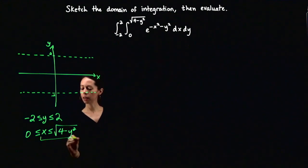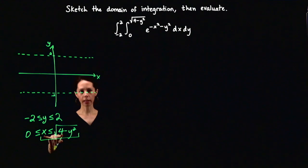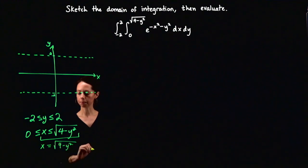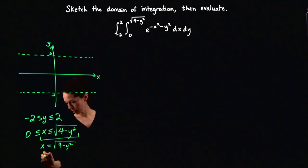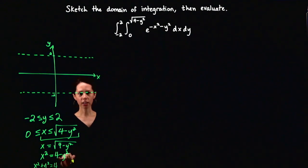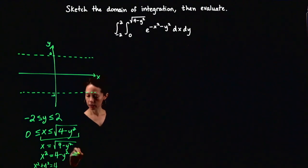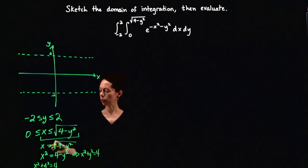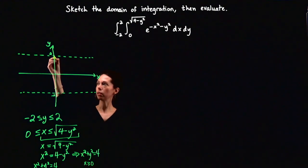If you don't recognize what shape is determined by the bound x equals the square root of 4 minus y squared, let's look at it in more detail. If you square both sides, you get x squared equals 4 minus y squared, and bringing the y squared over gives x squared plus y squared equals 4. It's part of the circle of radius 2 — not the entire circle, because x equals the square root of 4 minus y squared means x is greater than or equal to 0. So we have the right semicircle of radius 2.